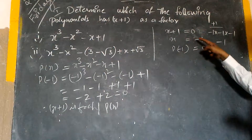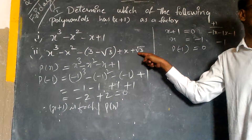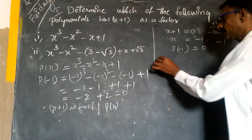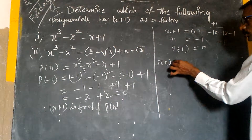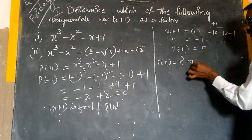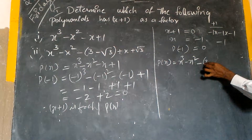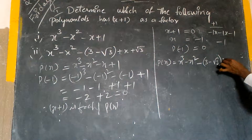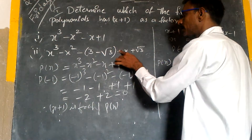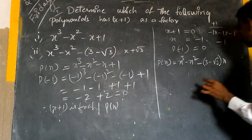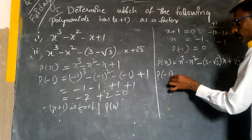Again, I would like to take x equals minus 1 and substitute it into this cubic polynomial. Take p(x) again, equal to x cube minus x squared minus (3 minus root 3) times x plus root 3. By taking p(minus 1).